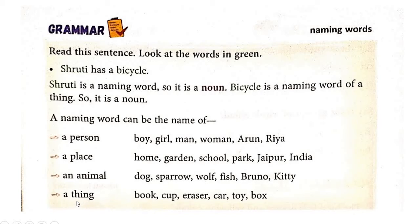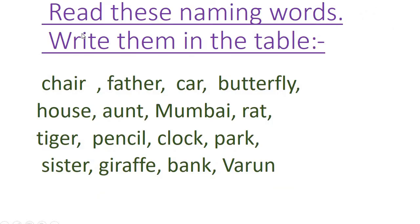A naming word can also be a thing. Which things? Book, cup, eraser, car, toy, box — these all are names of things, so they all are naming words. Do you understand? Now we have to read these naming words and write them in a table. This exercise is in your textbook, or you can see it in the PDF.